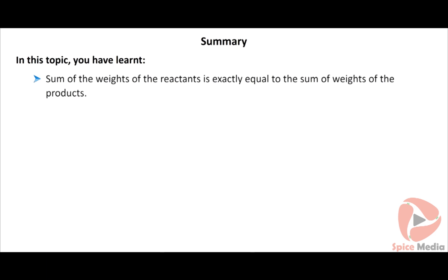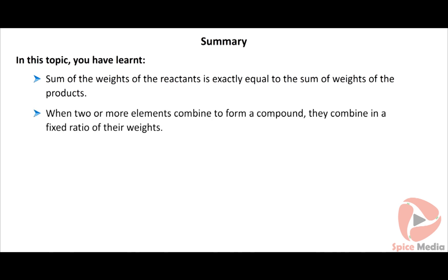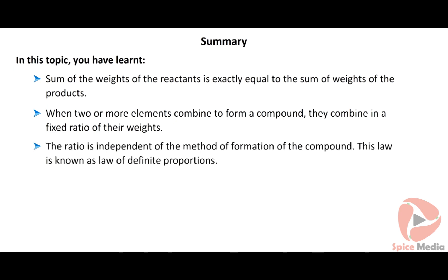From these experiments we infer that during a chemical change, matter is neither created nor destroyed but undergoes physical and chemical changes — this is known as the law of conservation of mass. A pure chemical compound always contains the same elements combined in the same definite, fixed, or constant proportions by weight, irrespective of its source or method of preparation. This is also called the law of fixed proportions or constant proportions.